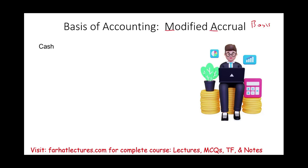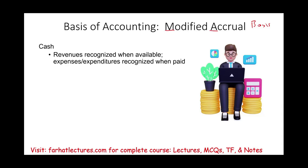What is the cash basis of accounting? The cash basis defines when you recognize revenues and when you recognize expenditures. Under the cash basis, revenue is recognized when cash is available, and expenditures are recognized when cash is paid — that's why it's called the cash basis. If you receive the cash, it's considered revenue; when you pay the cash, it's considered an expenditure.